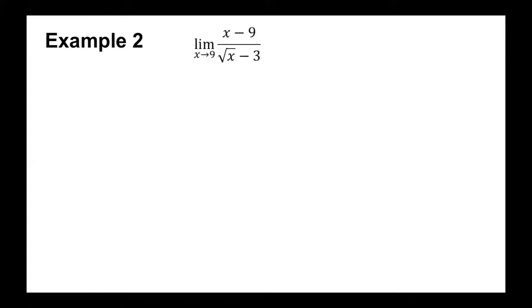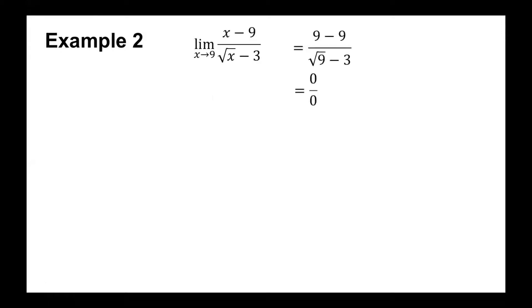There are also times when a radical function could be indeterminate. Consider this example: evaluate the limit of (x - 9) / (√x - 3) as x approaches 9 by direct substitution. Substituting x = 9 gives (9 - 9) / (√9 - 3) = 0/0, which is an indeterminate form. This means we need to simplify the function by the rationalizing technique.